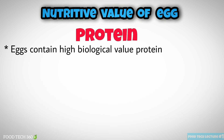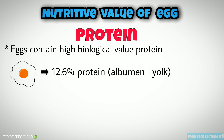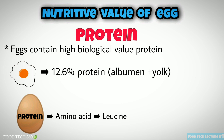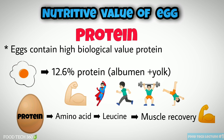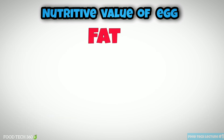Eggs contain high biological value protein. Out of the whole egg edible portion, 12.6% is protein, which includes both yolk and albumin. Protein in the egg is a good source of the essential amino acid leucine, which plays a significant role in controlling the use of glucose by skeletal muscle and helps in fast recovery of muscles after exercise. Hence eggs can be recommended for people training for endurance.